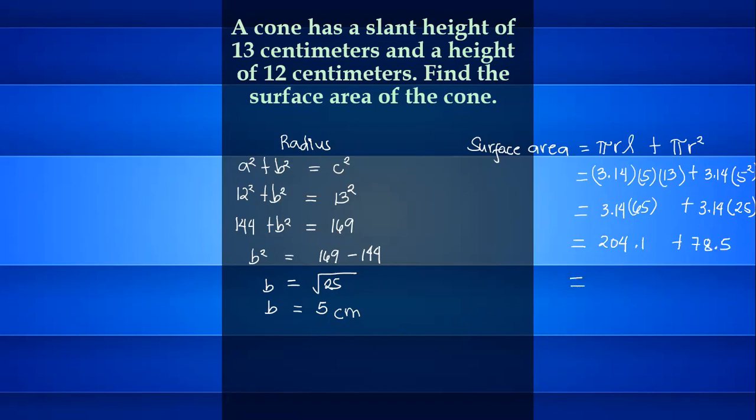204.1 plus 78.5 is equal to 282.6 cm squared. This is the surface area of this cone. Thank you for watching. God bless.